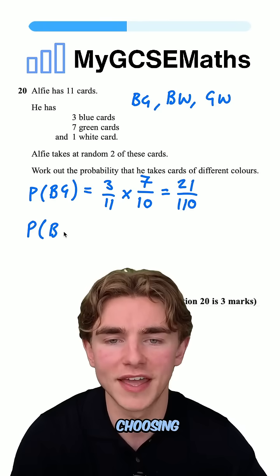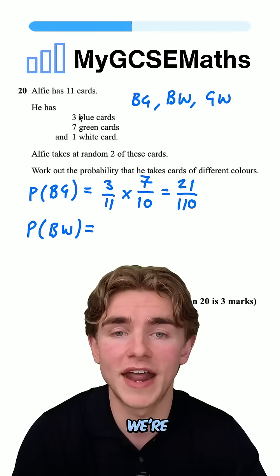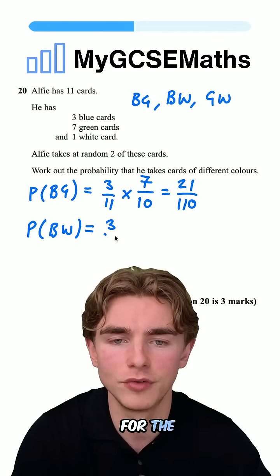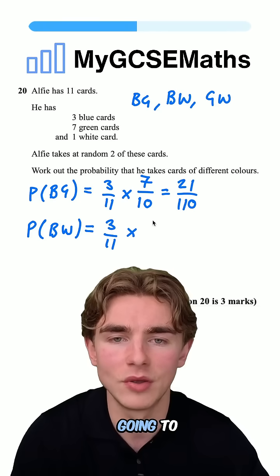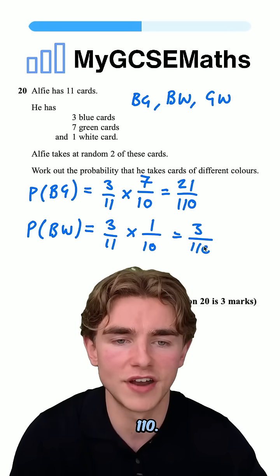Now, what about the probability of choosing a blue card and a white card? We have 3/11 for the blue, then the white is 1/10. So that is 3/110.